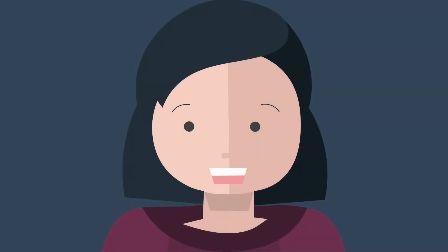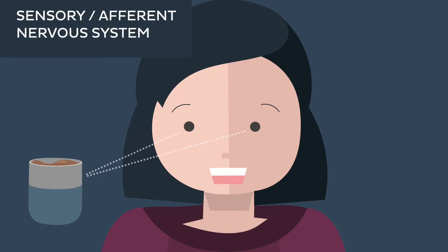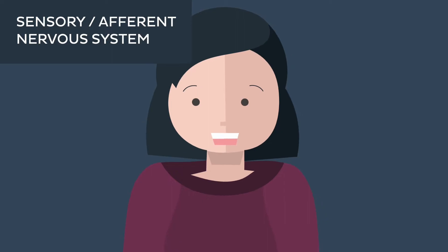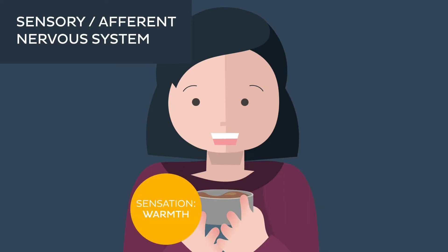Before you grab that cup of coffee, you see it. This marks the initial step in the sensation response pathway. Then, as you pick up the cup, you sense its warmth against your cold hands. This is part of the sensory division, also known as the sensory or afferent nervous system.